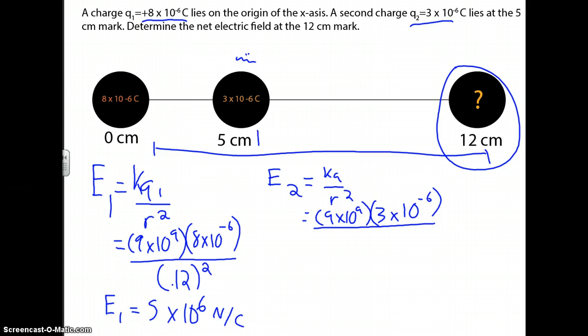Now, the distance between here and here is 7. So, 0.07 squared. And you multiply, figure it out. And you get 5.5 times 10 to the 6th.